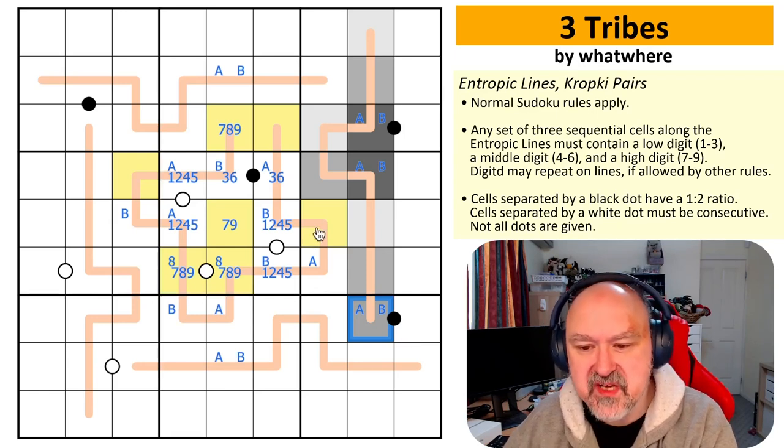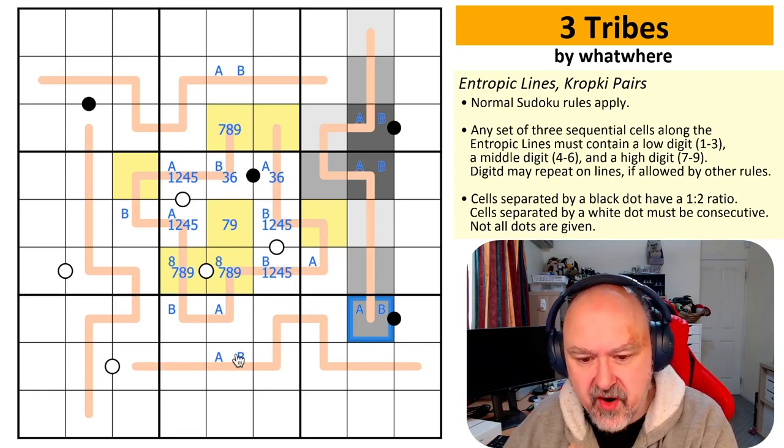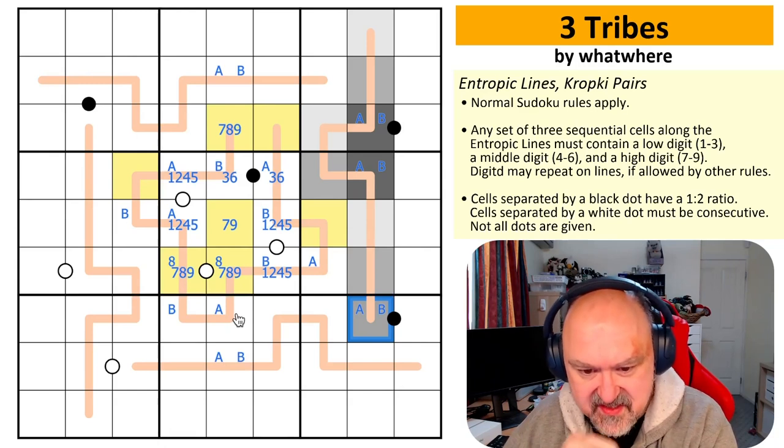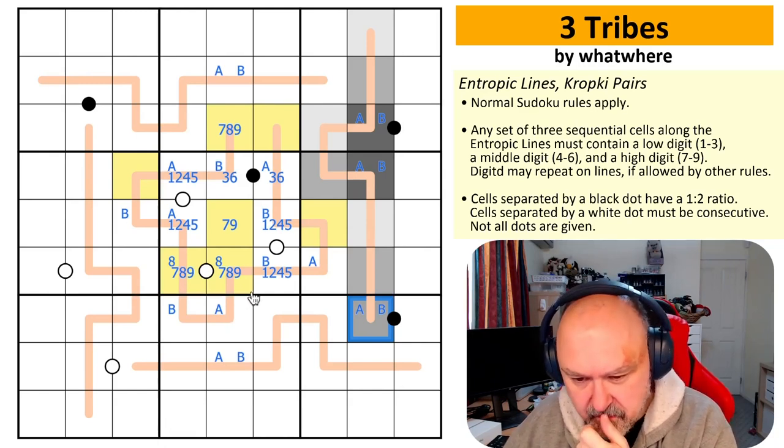Of course, that's where the Three Tribes title comes from. I've got Tribe A, B, and C — I've got High, Middle, and Low.